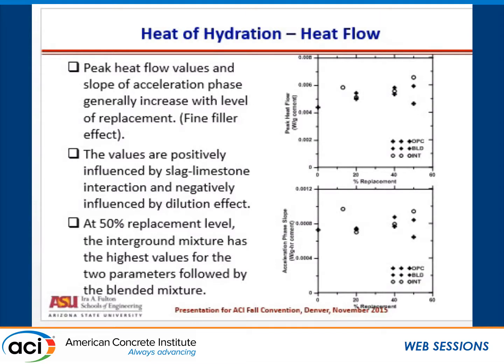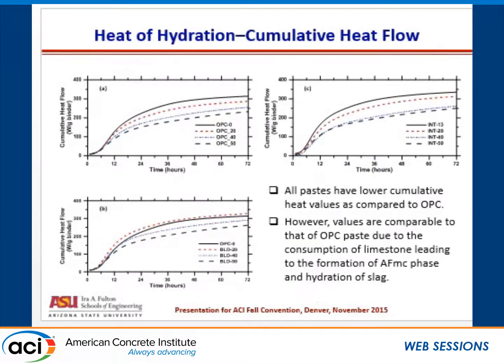At 50% replacement level, the interground mixture has the highest values, followed by the blended ones, and then the OPC mixture. These are the cumulative heat plots for all the different systems: binary blends, interground blends, and ternary blended systems with slag and the blended composition of limestone. All of the pastes have lower cumulative heat values compared to OPC. These values are plotted as watt per gram of binder, where binder is defined as OPC plus slag plus limestone overall. The values gradually decrease as you increase the replacement level.